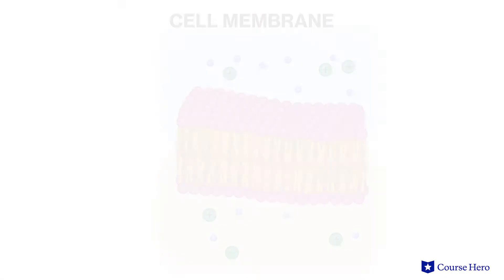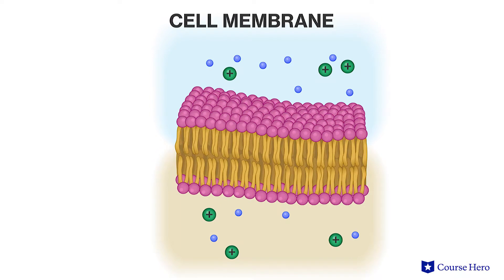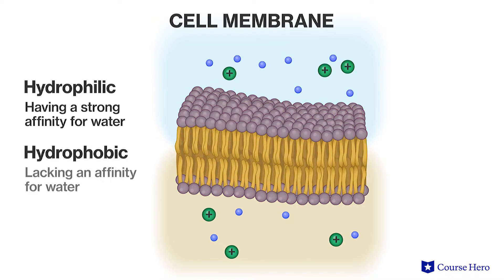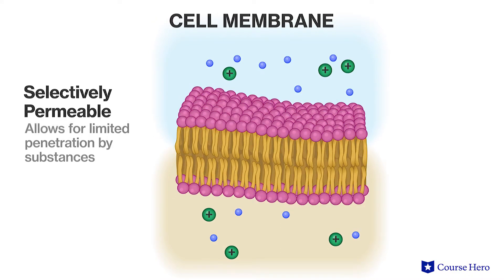The cell membrane, which borders every cell, plays several roles, but probably the most important of these is its ability to regulate the movement of material into and out of the cell. The outer and inner surfaces of the cell membrane are hydrophilic, whereas the interior of the membrane is hydrophobic, resulting in a membrane that is selectively permeable.